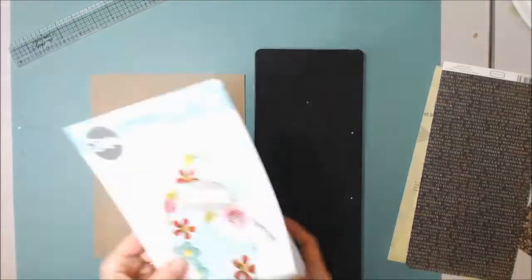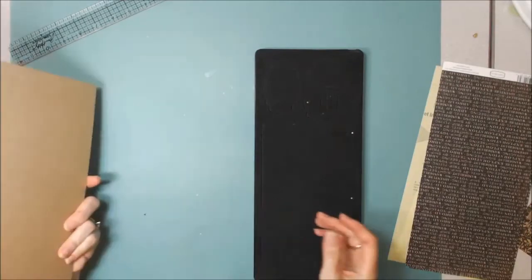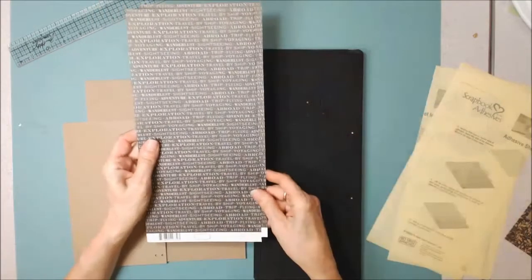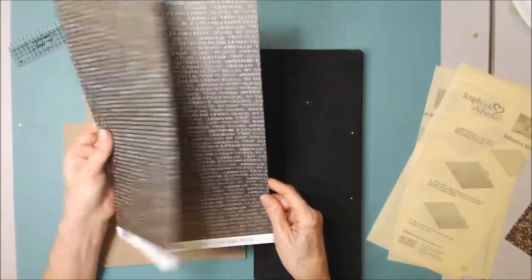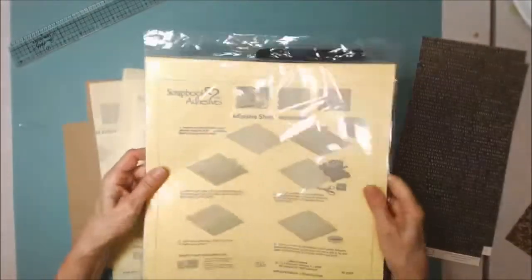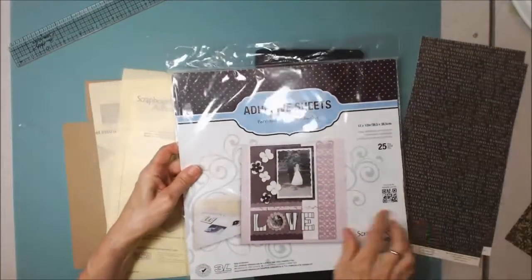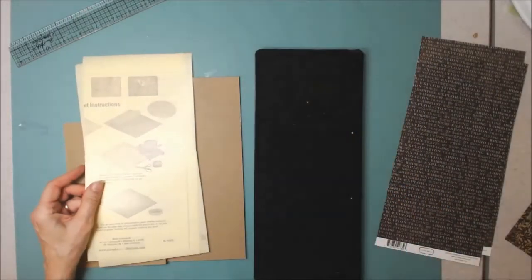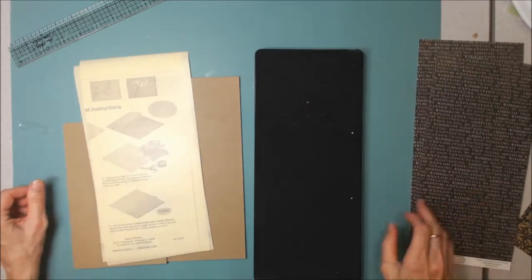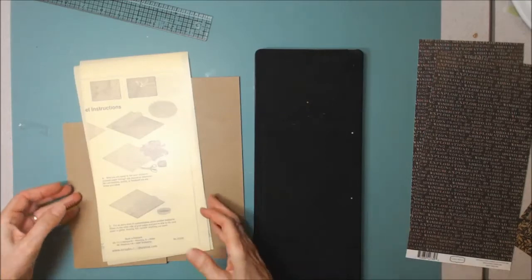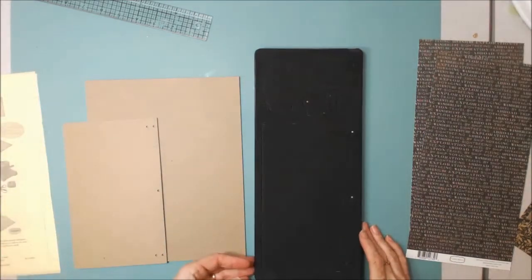We're going to be using this die and some chipboard. I'm going to be using Cartabella's Transatlantic Travel paper. And I've got some scrapbook adhesive sheets here, 12 by 12. I've gone ahead and cut them in half so that they're 6 by 12. There are lots of brands on the market. I know Sizzix makes one. They're all going to do kind of the same thing.